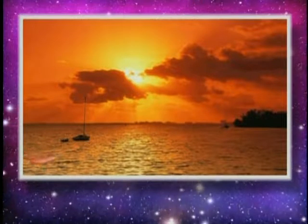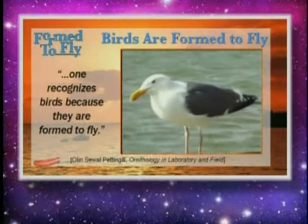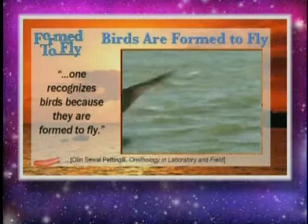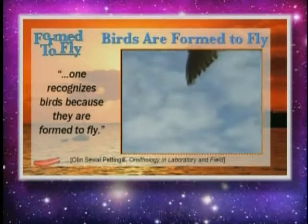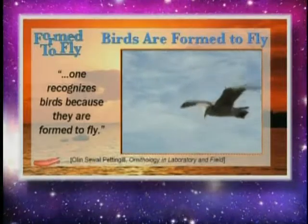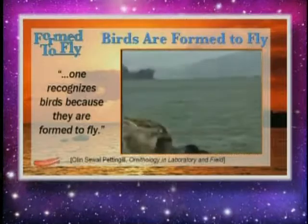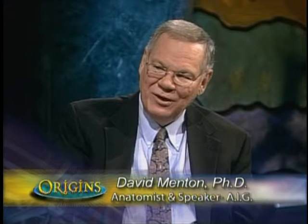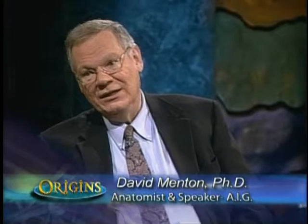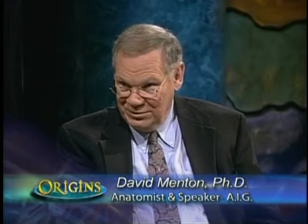We put together a whole talk called Form to Fly. I got that expression from a laboratory manual written by a great ornithologist, Olin Seawall Pettengill, who said: you can always recognize birds because they are formed to fly. Just watch this gull take off — the feathers can open and close like Venetian blinds, individually controlled by muscles with their own nerve supply and feedback to the brain. Feathers are just one of the important reasons a bird is able to fly.